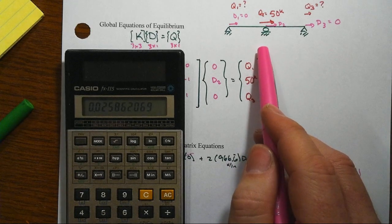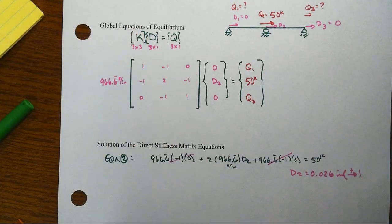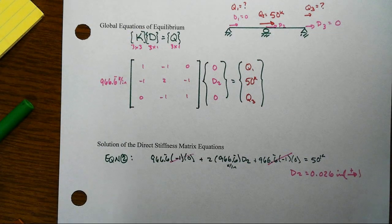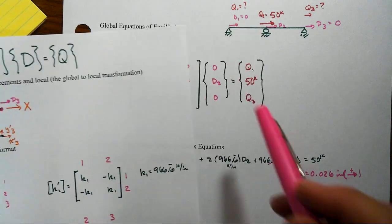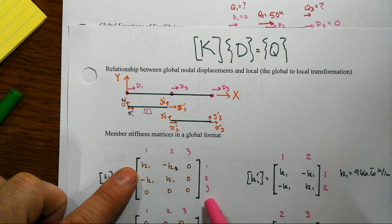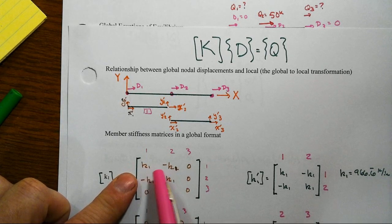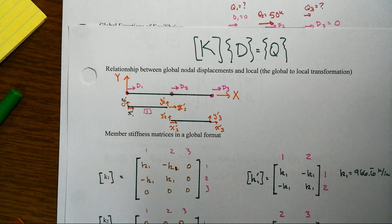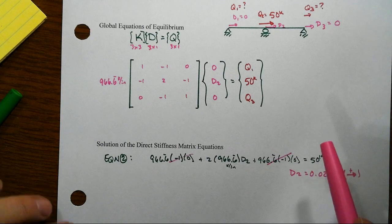That's interesting. From that, notice we could go back to our member stiffness matrix. Now that we know all of the displacements, we can put those into the member view and figure out what the member end forces are that go along with that.